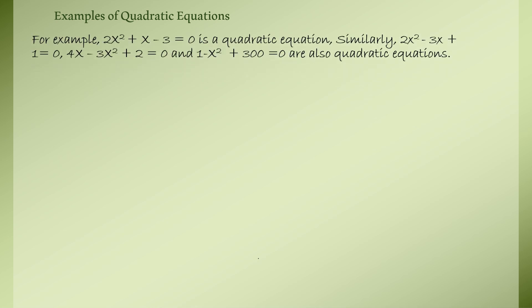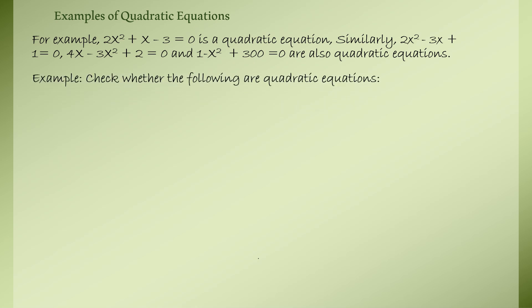Let's look at some examples of quadratic equations. The equation 2x² + x − 3 = 0 is a quadratic equation. Similarly, 2x² − 3x + 1 = 0, then 4x − 3x² + 2 = 0, and 1 − x² + 300 = 0 are also quadratic equations.